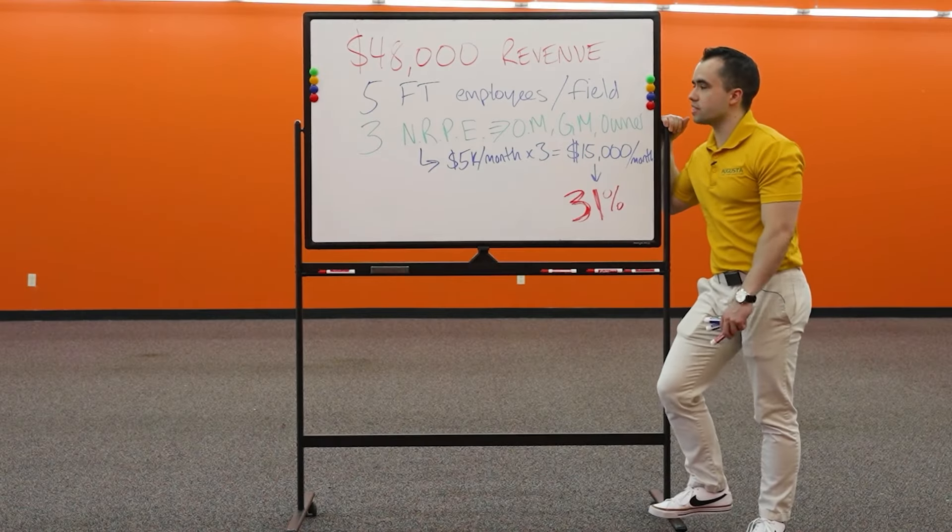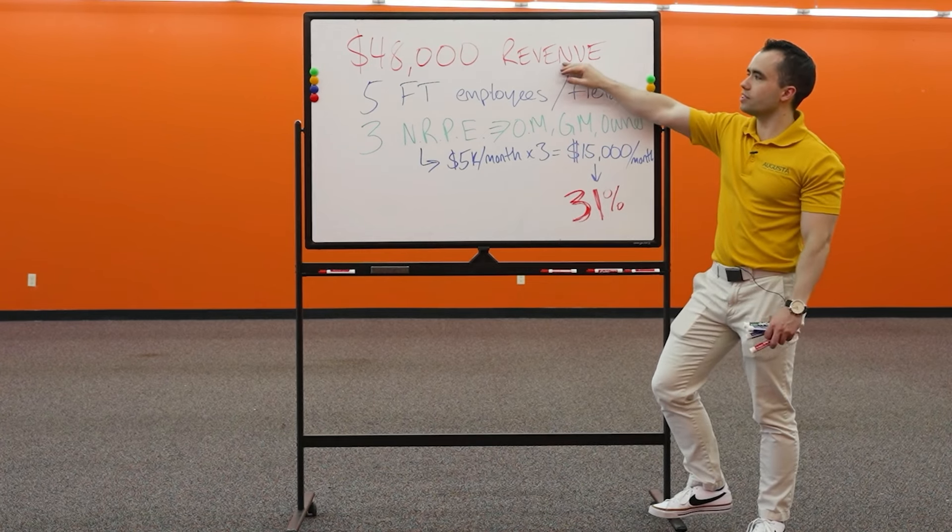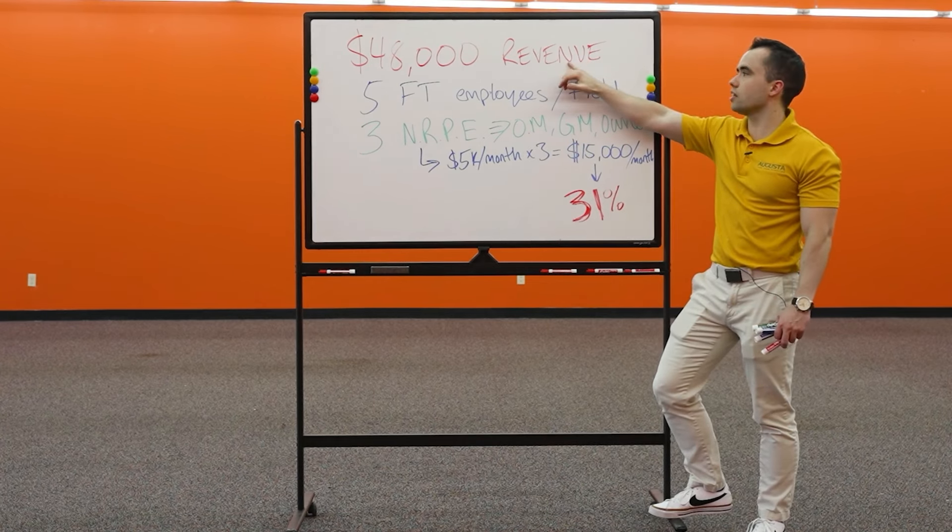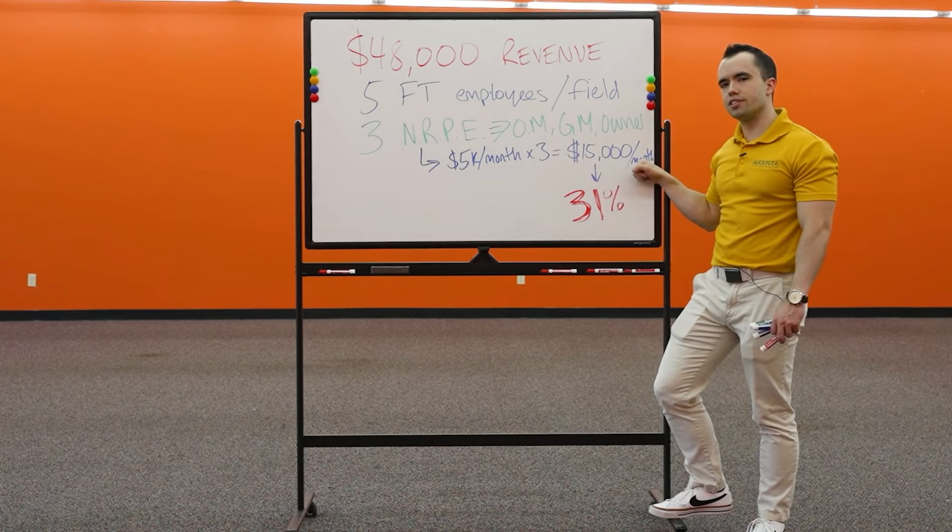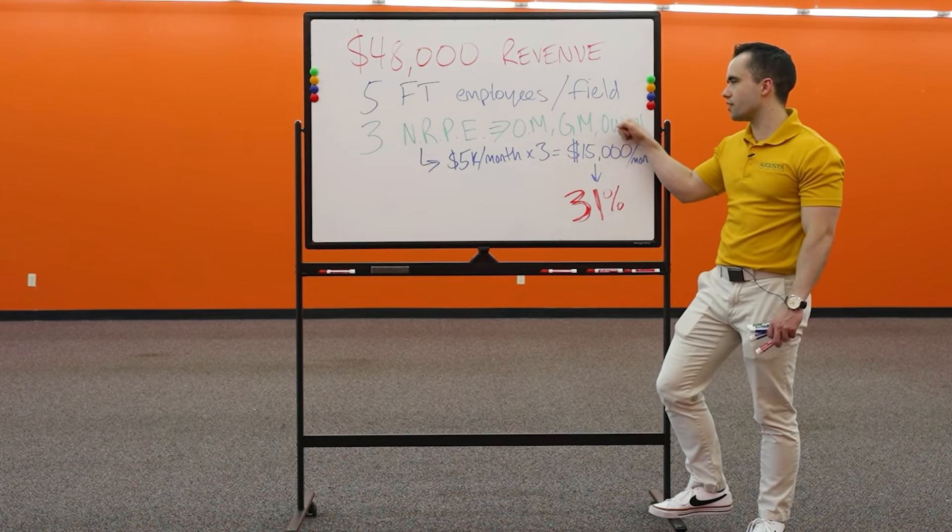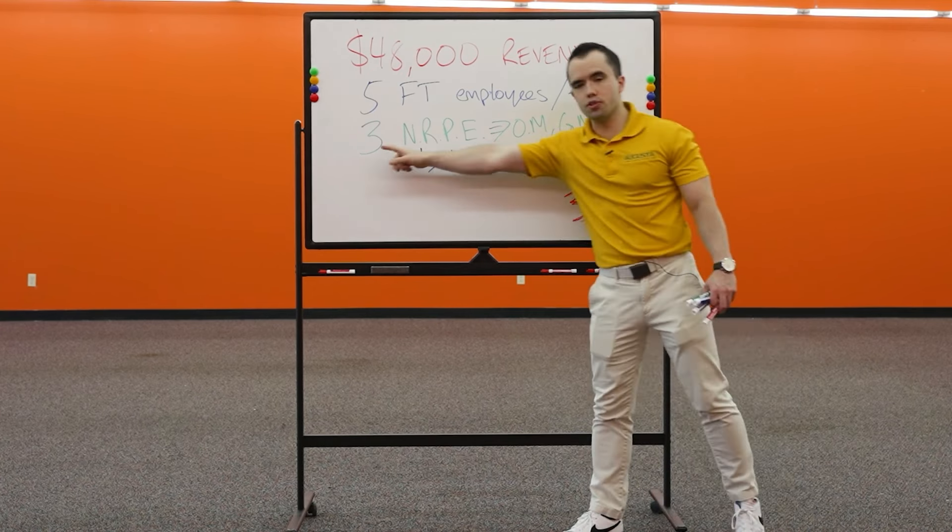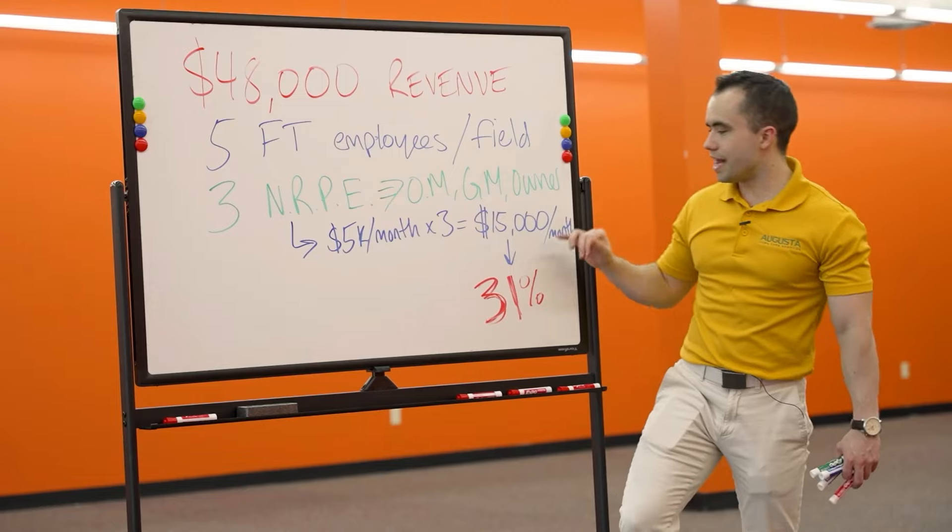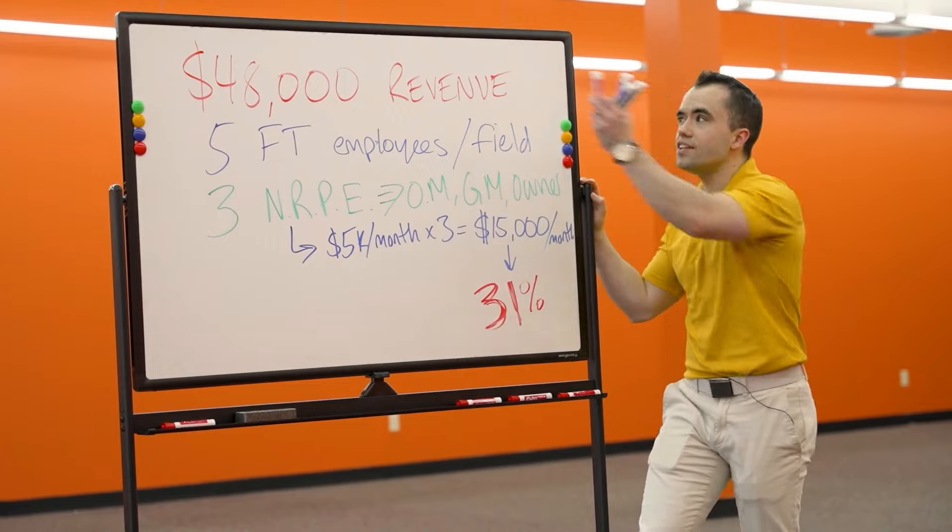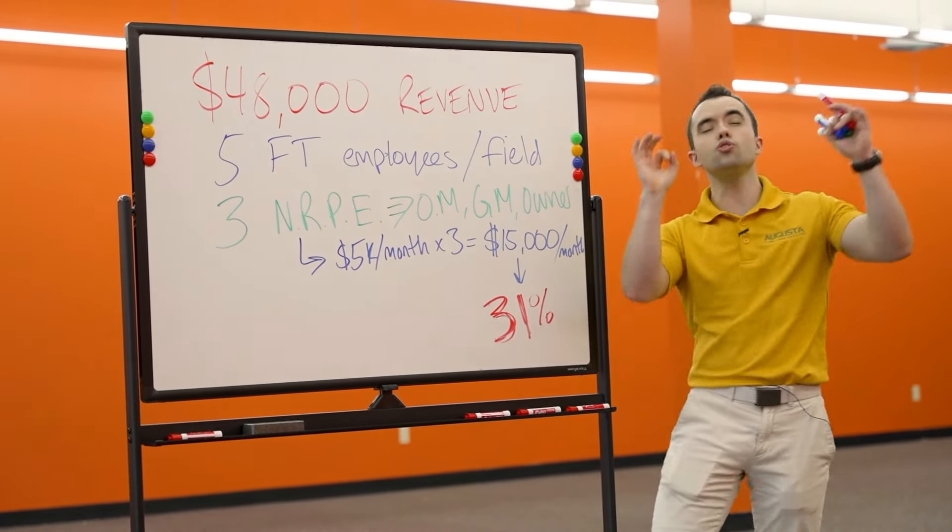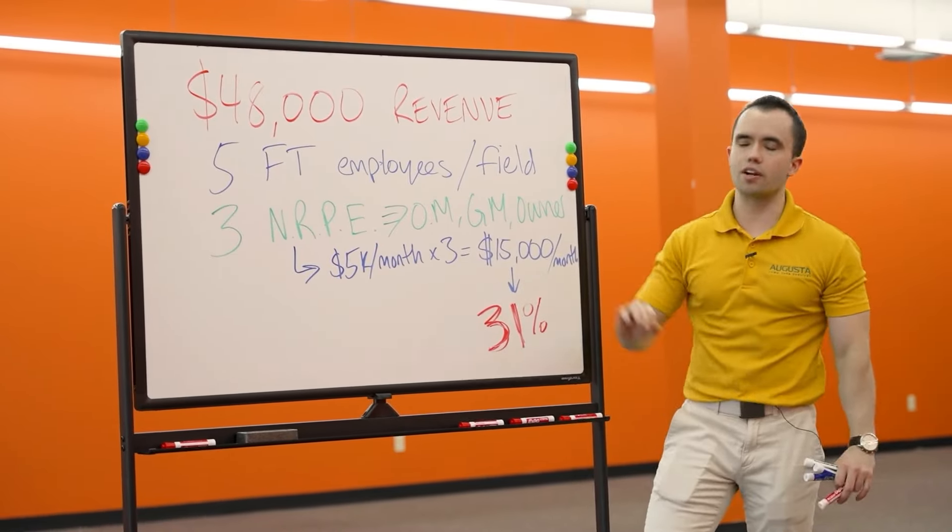During their off-season, they would do less than $40,000, sometimes as low as $20,000 in revenue, which means now that $15,000 per month in salaries that they're paying their general manager, office manager, and the owner that none of them are producing any revenue for the business. Now in the off-season, that could be like 60 plus percent of their revenue going out the door just to wages for non-revenue producing employees.